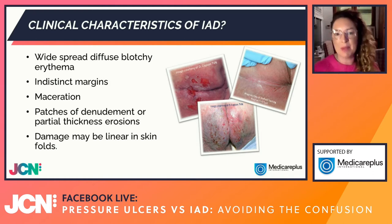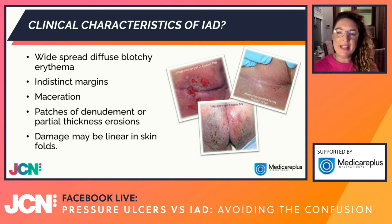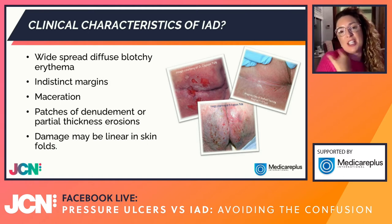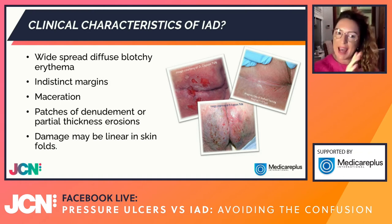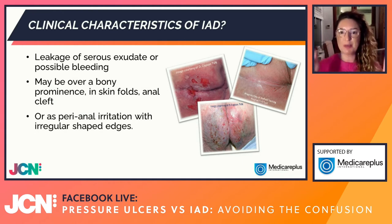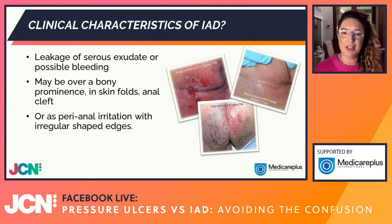In the case of skin folds, the damage can be quite linear — in between the thighs, underneath breasts, or underneath arms. There can be leakage of serous exudates and sometimes bleeding. The anal cleft is a particular danger area where the buttocks are close together. You'll see perianal irritation and irregular shaped edges. Pain with IAD is a significant issue — a lot of patients describe it as a burning type pain, affecting appetite and willingness to sit.